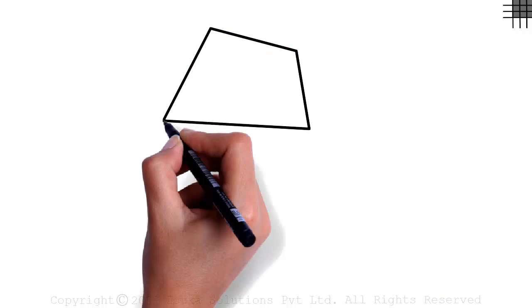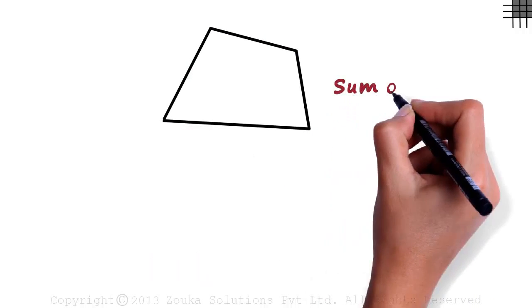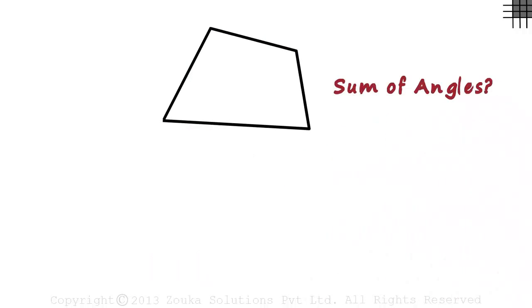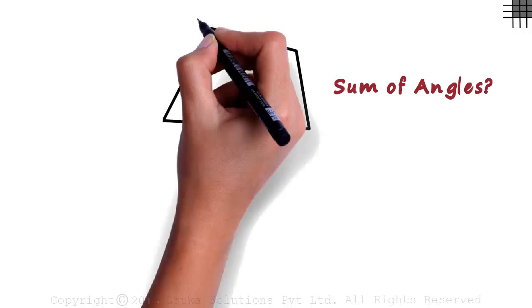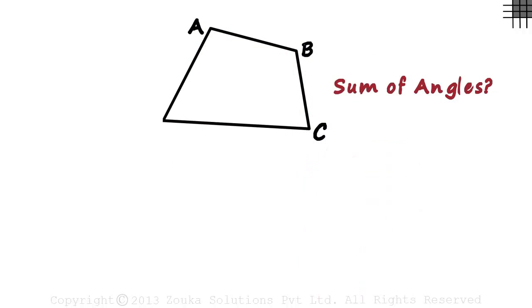Here's a quadrilateral. How do we find the sum of angles of this quadrilateral? Let's name the quadrilateral first. Let's call it ABCD.